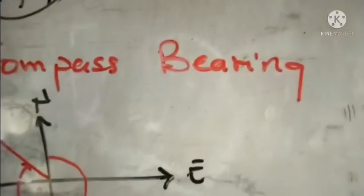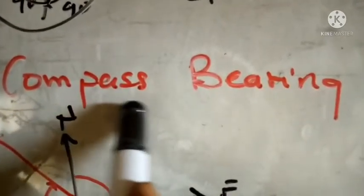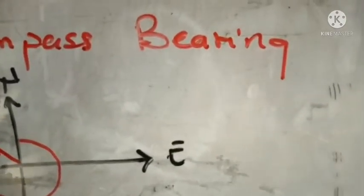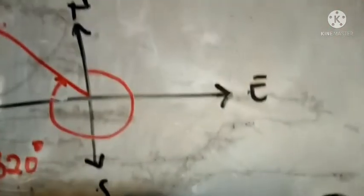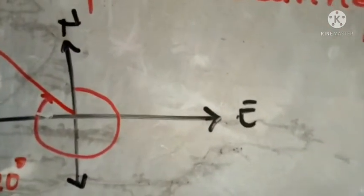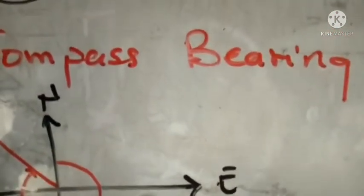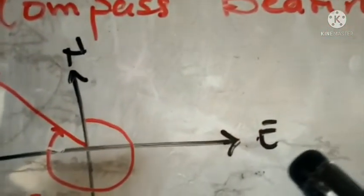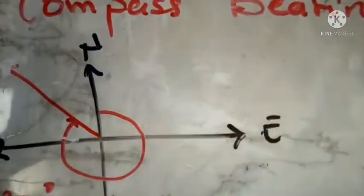Now let's look at compass bearings. A compass bearing uses three figures. Most of the time, you take the compass measurement from the north or from the south. Let's solve a question: we are given 320 degrees and asked to express it as a compass bearing. The compass bearing takes the measurement from the north or from the south, so let's take it from the north.